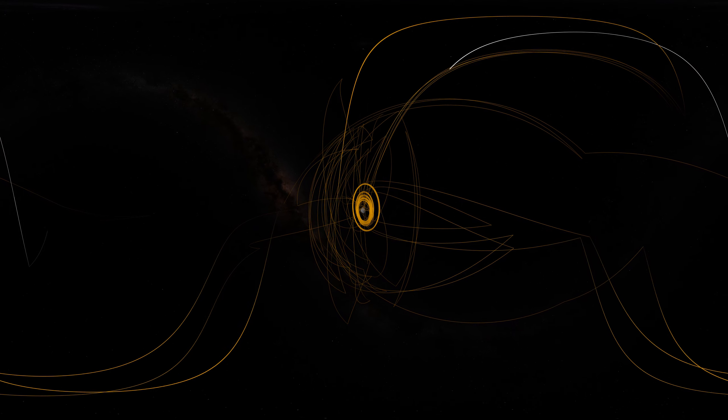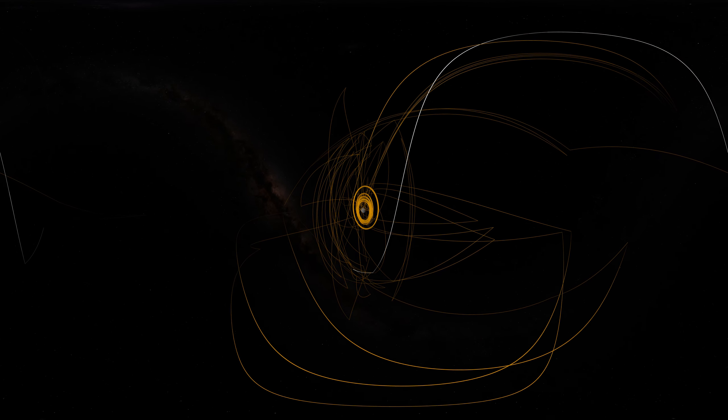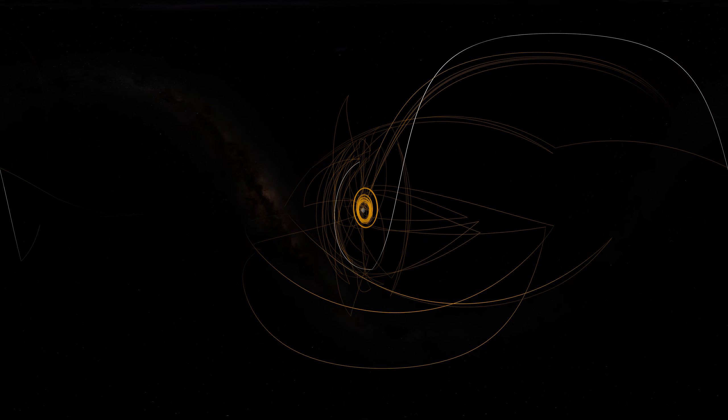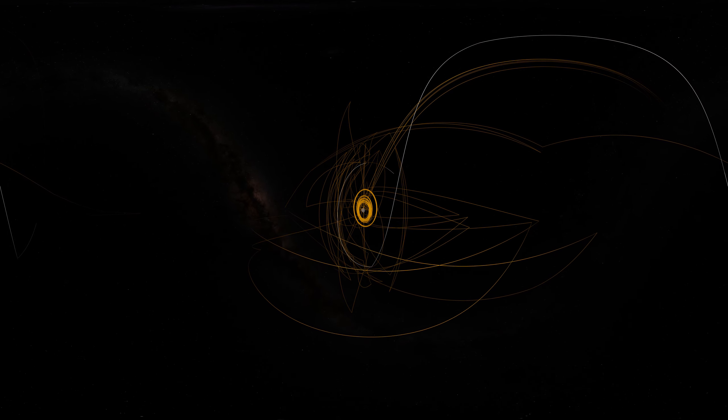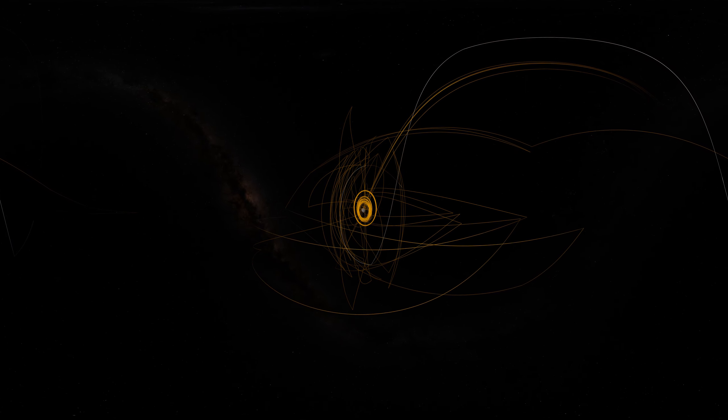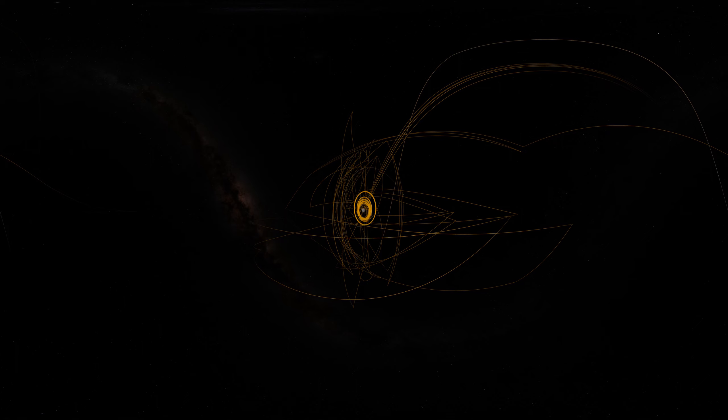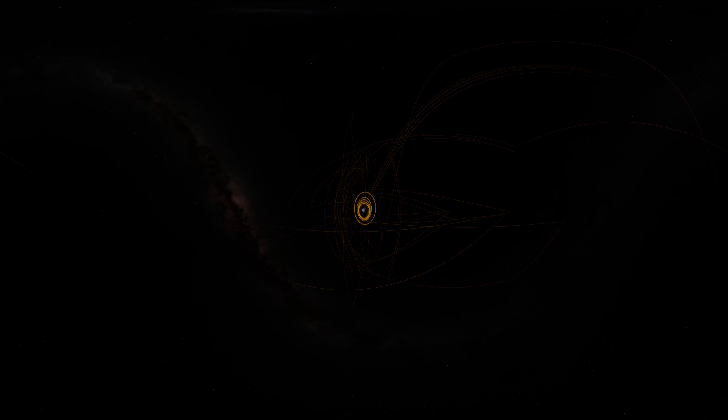Before departing Bennu, OSIRIS-REx was given one final task. On April 7th, it flew over site Nightingale to observe how the sample collection event had changed the surface. And with that, OSIRIS-REx had recorded its mark on Bennu and spun the last strand of its web.